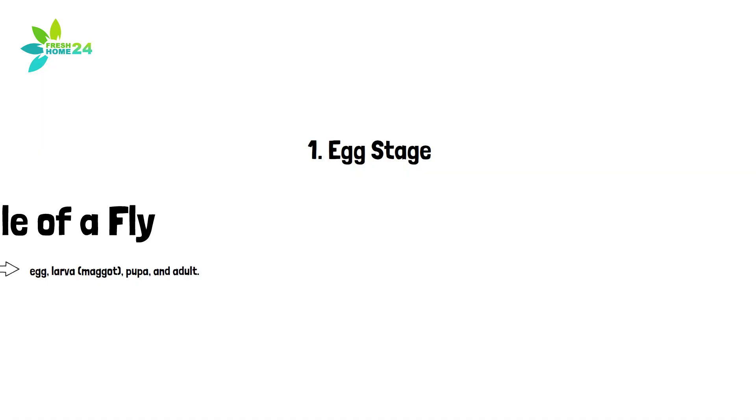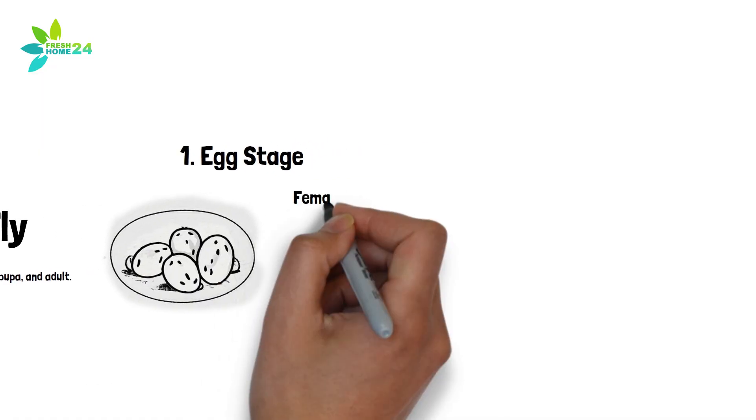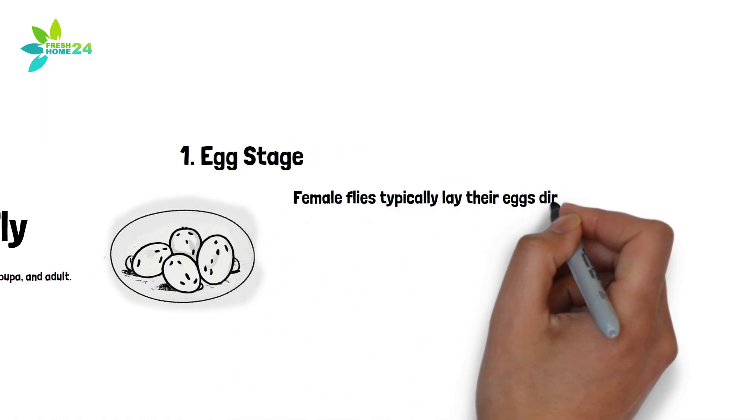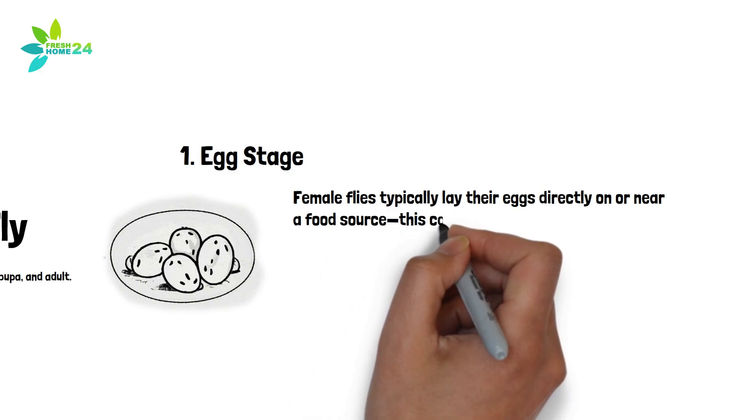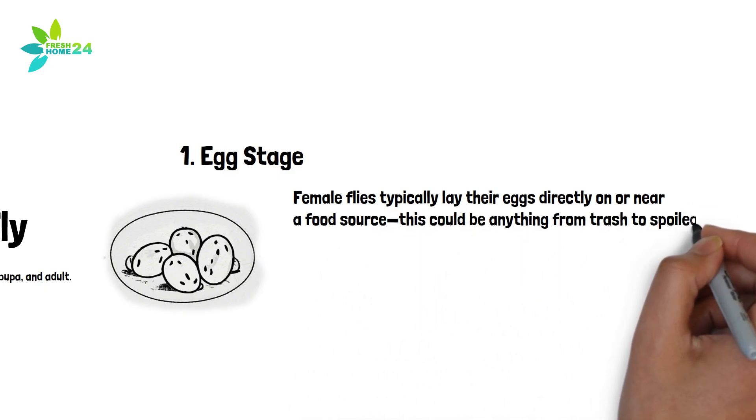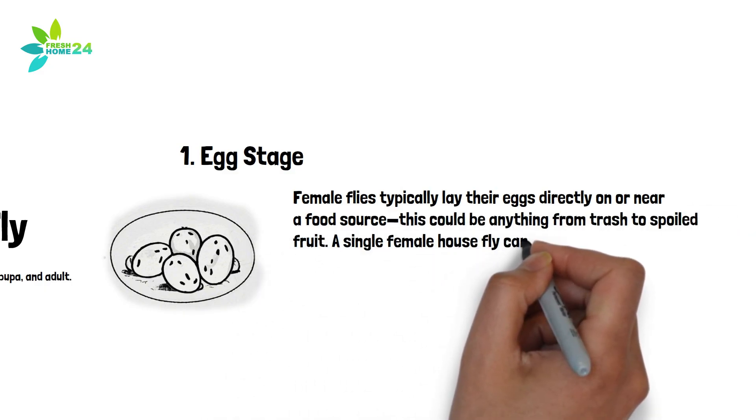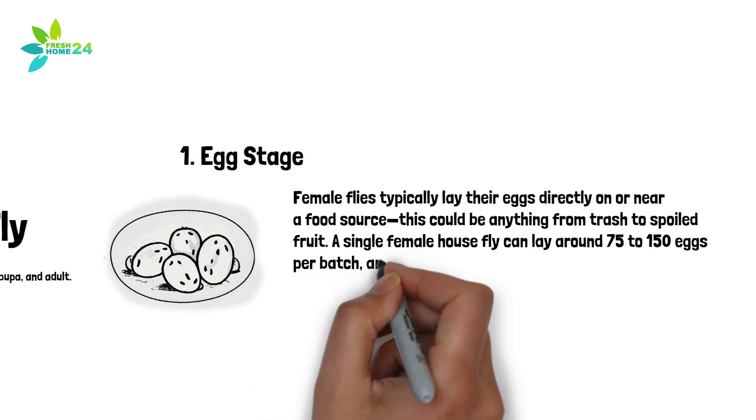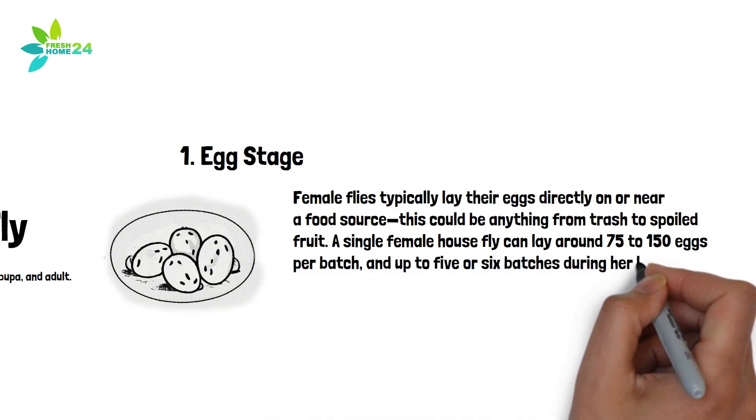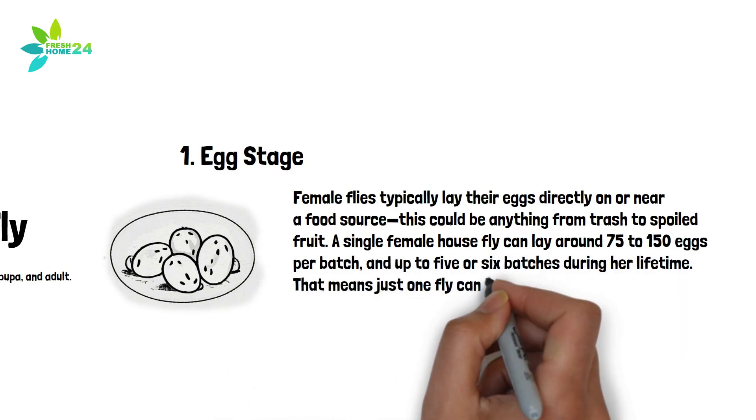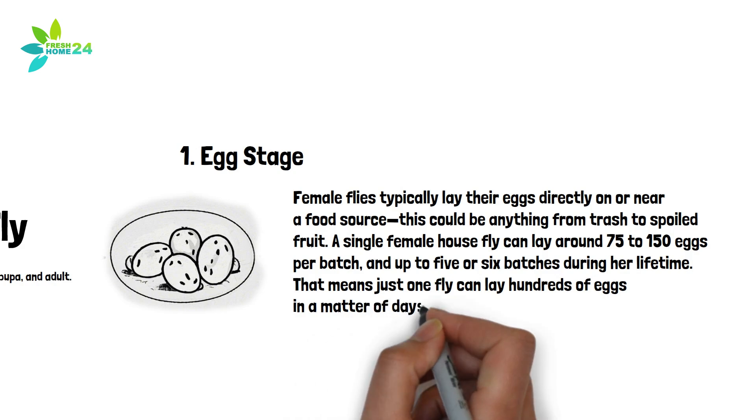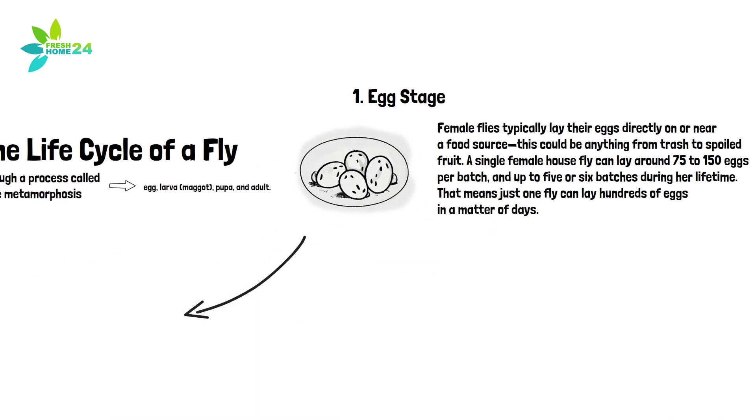1. Egg Stage. Female flies typically lay their eggs directly on or near a food source. This could be anything from trash to spoiled fruit. A single female housefly can lay around 75 to 150 eggs per batch, and up to 5 or 6 batches during her lifetime. That means just one fly can lay hundreds of eggs in a matter of days.